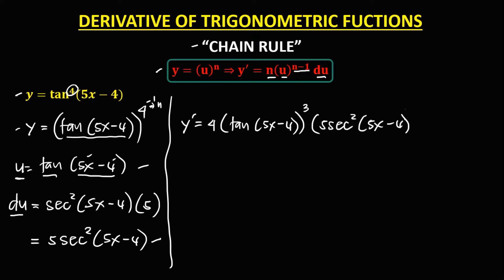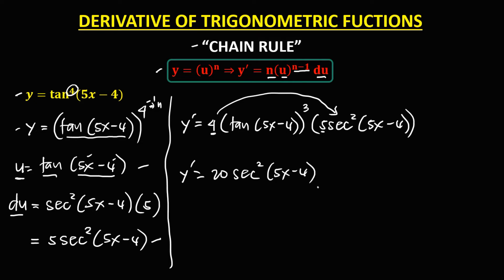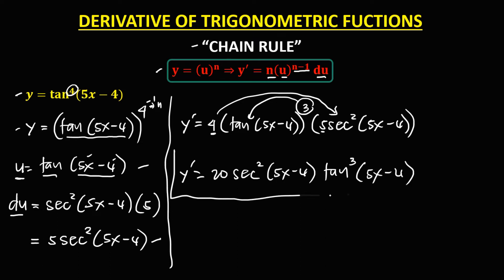Then simplify: y prime — multiply 4 times 5, that's 20. Then secant squared (5x minus 4), times tangent to the power 3 of (5x minus 4). So this is now the derivative.